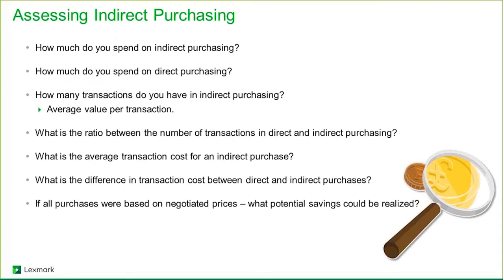To better assess indirect spend, the first step is to identify the key internal stakeholders — the people who would need to intercede to approve expenses — and then map out distinctive characteristics through a gap analysis to identify opportunities for improvement. Key questions include: how much do we spend on indirect purchasing, what is our transaction volume, and what are the ratios? We typically find that indirect spend transaction ratios represent about 70% of the transaction volume. Looking at average costs and opportunities to negotiate prices is a sweet spot for managing indirect spend.